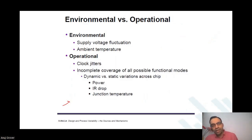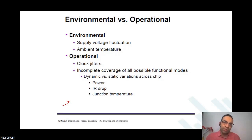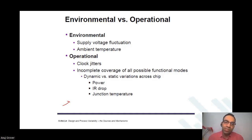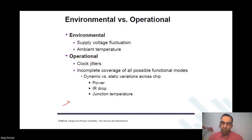We will share the entire slides with you — you can study them in detail. This was just to give you a glimpse of various kinds of variations that happen. There are some variations which are environmental in nature — for example, supply voltage fluctuations could happen, temperature could change. And there are some variations which are operational in nature — for example, clock jitter, and static and dynamic variations in terms of IR drop, junction temperature, and all those things across the chip.